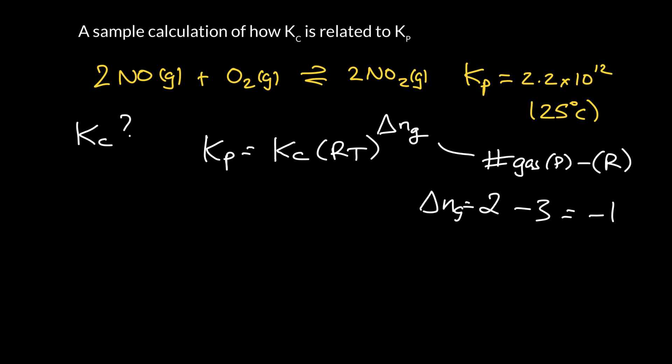So now we're ready to find Kc. So we want to rearrange the equation, so Kc is equal to Kp divided by RT to that change in number of gas molecules. Kp was 2.2 times 10 to the 12.